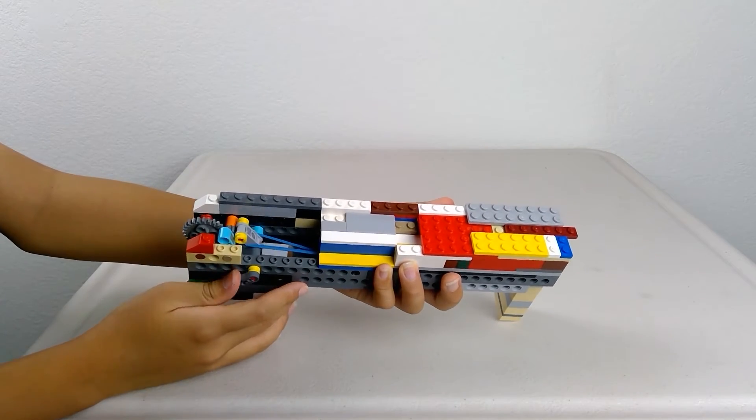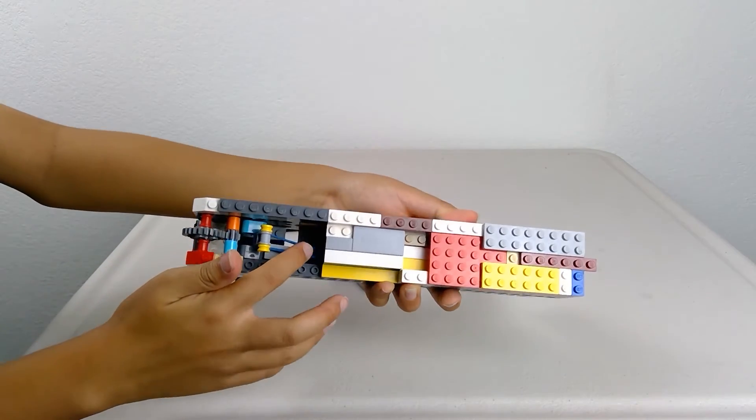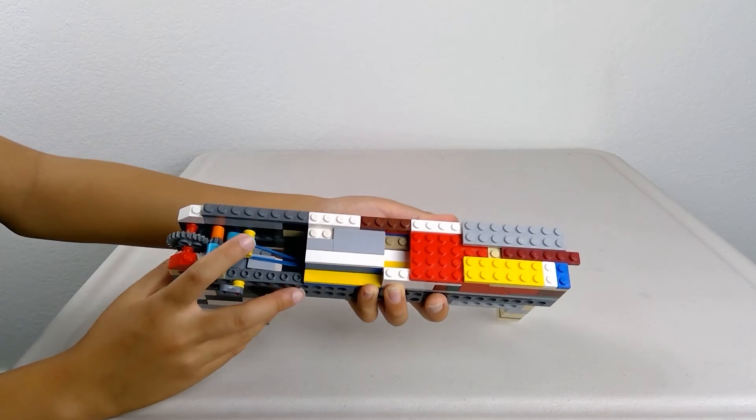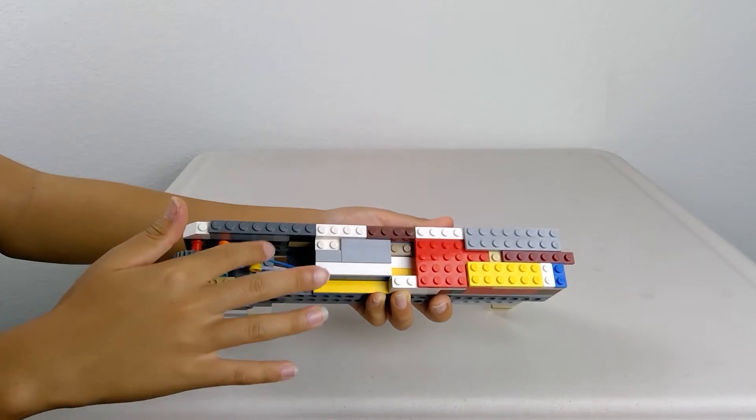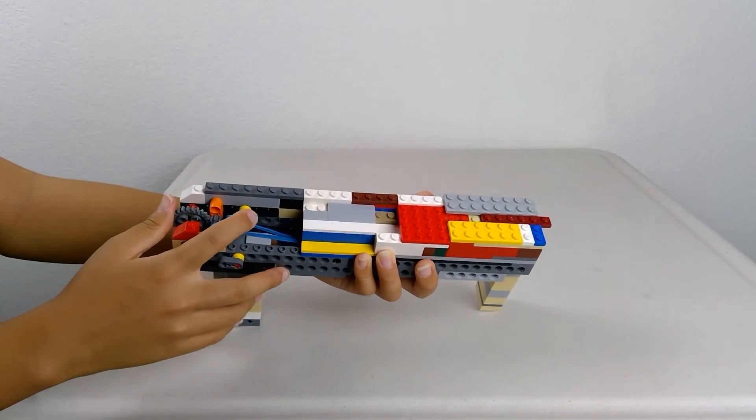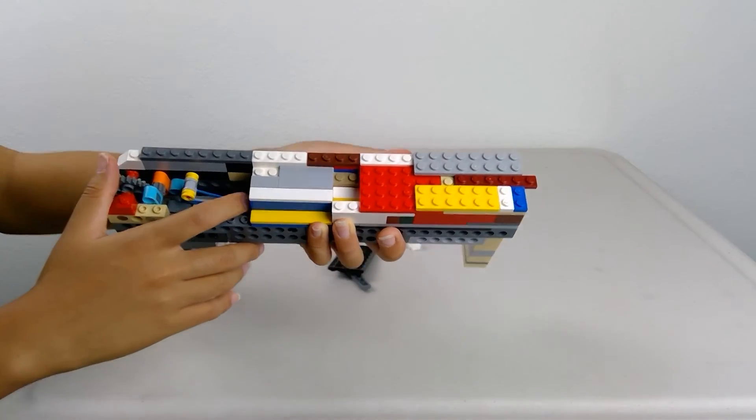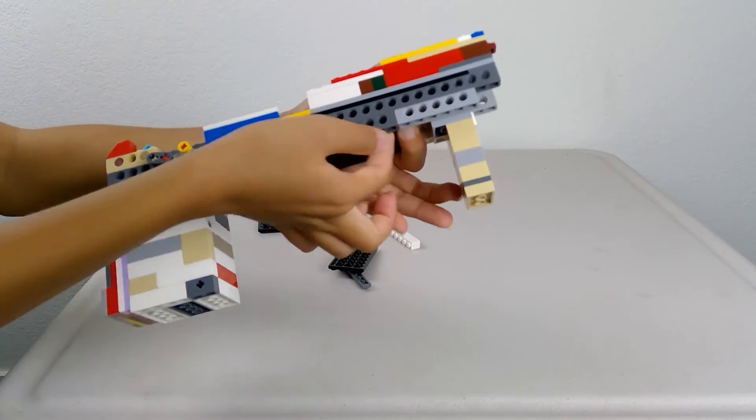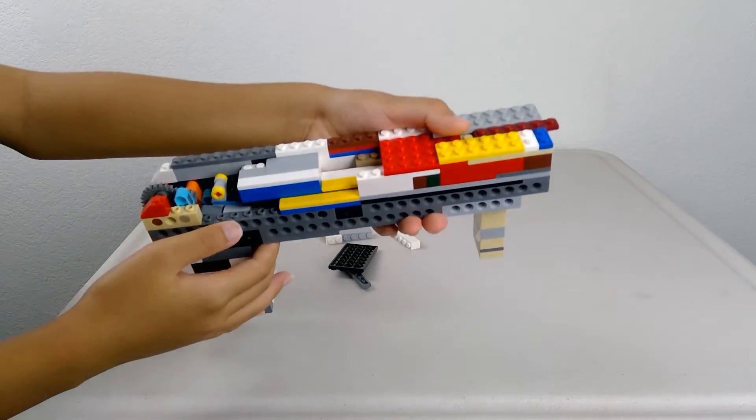This is basically how the mechanism works. Now this gear, it has to be pulled back by this rubber band right here. Otherwise, it will not stay back like that. So I use this rubber band and it's connected to this part of the gun's body.